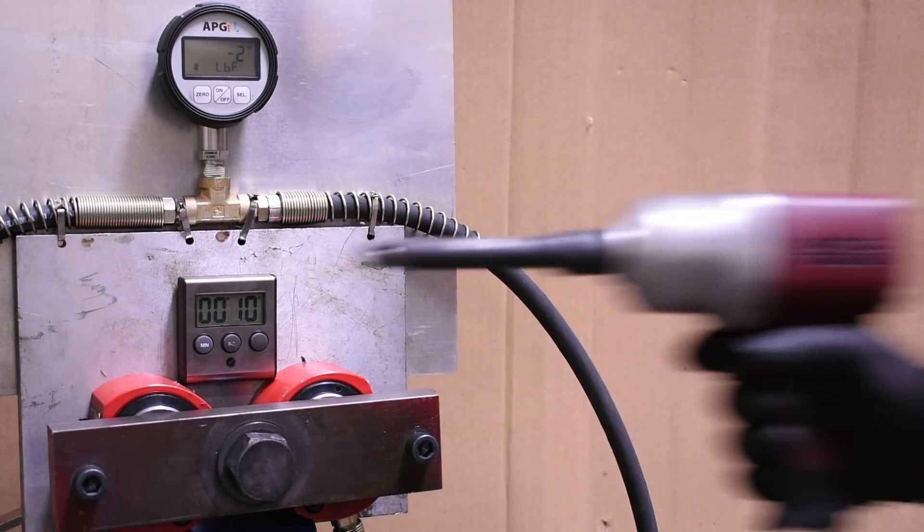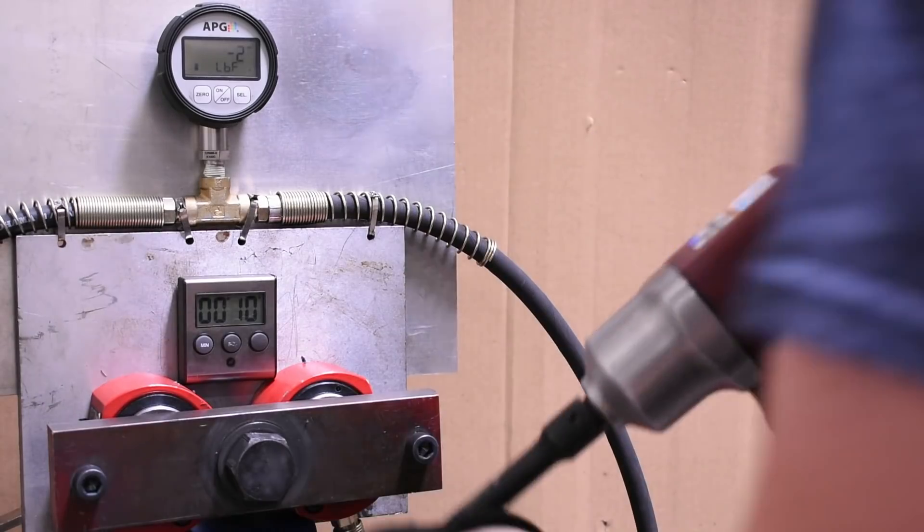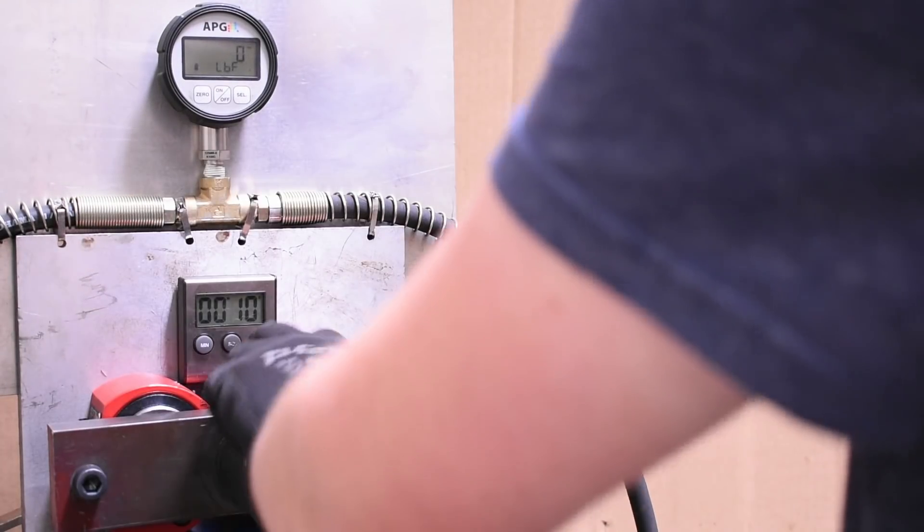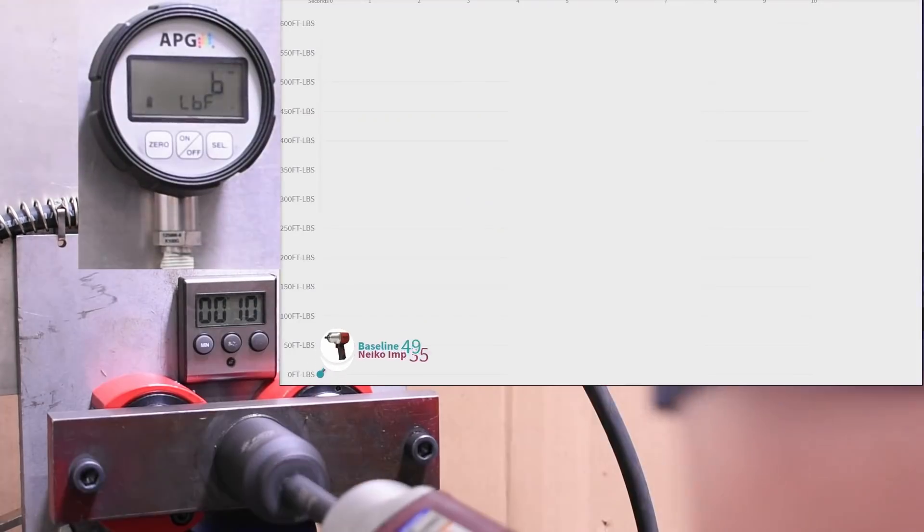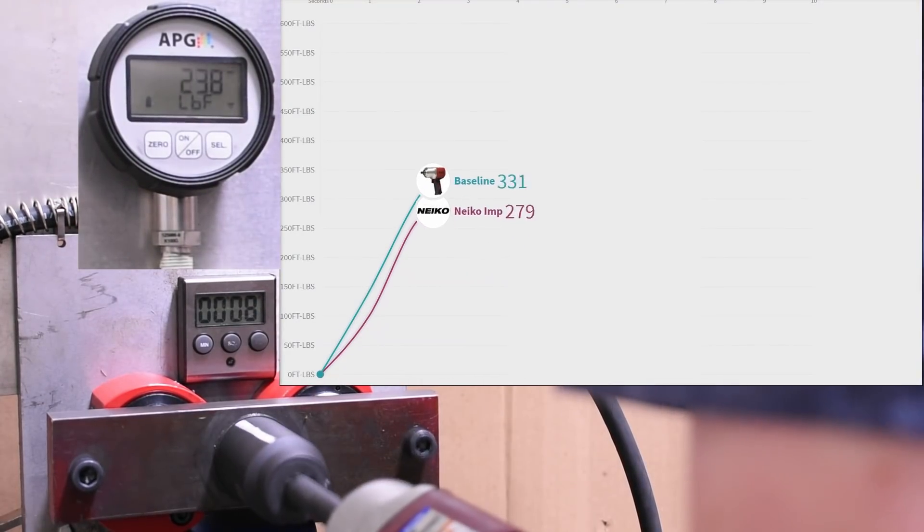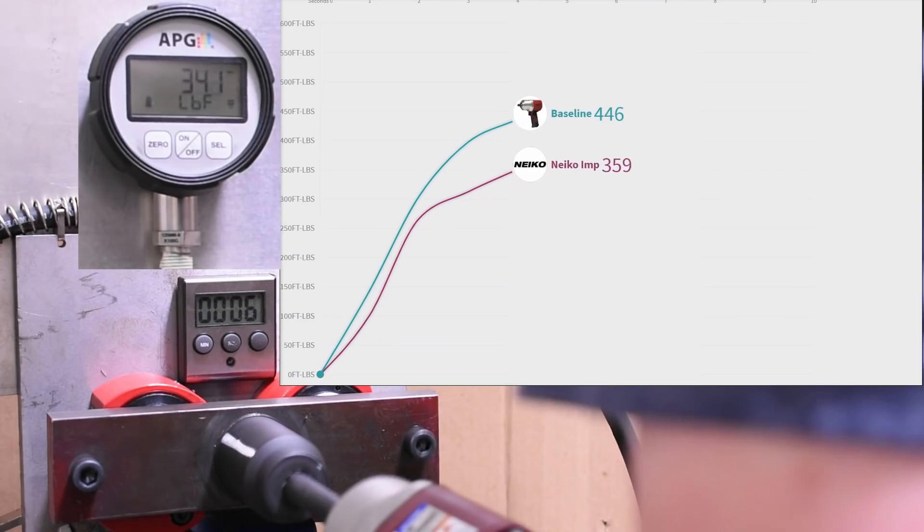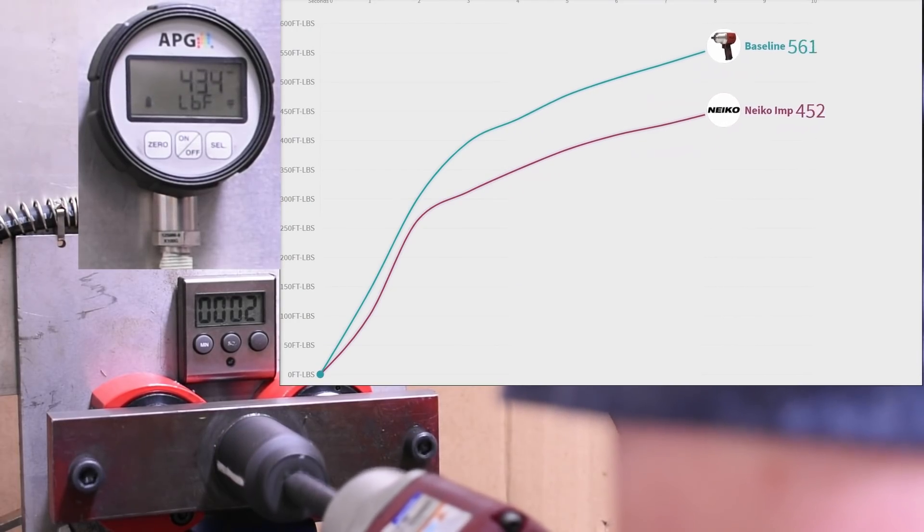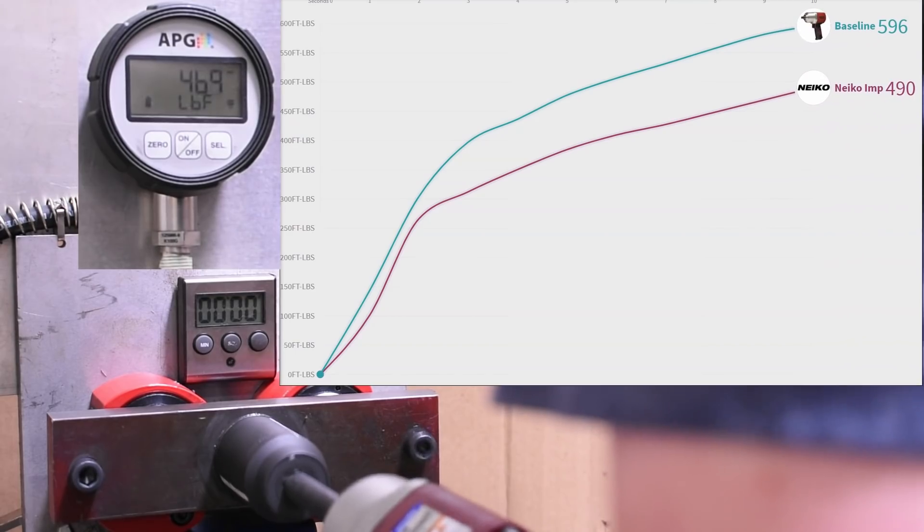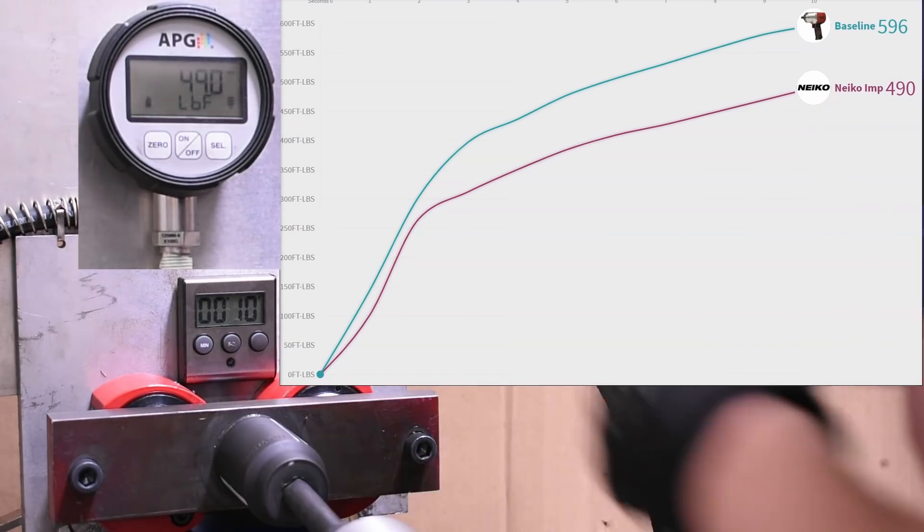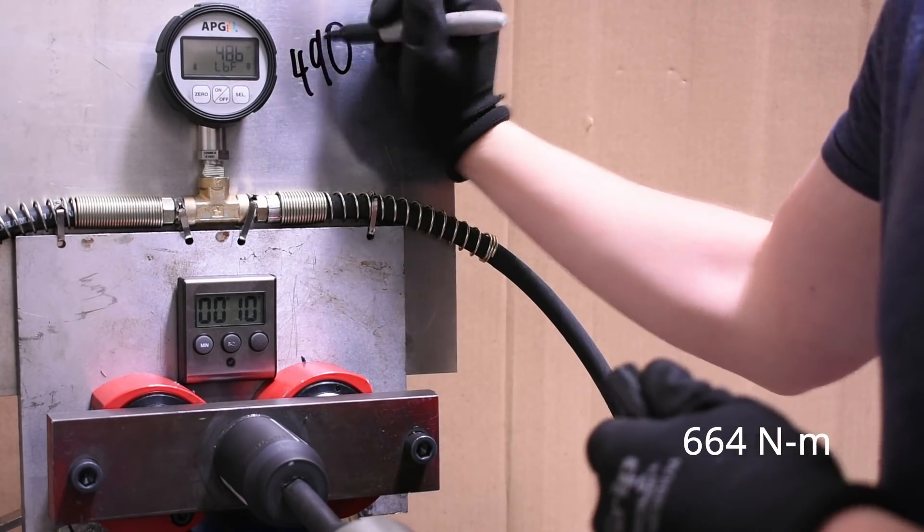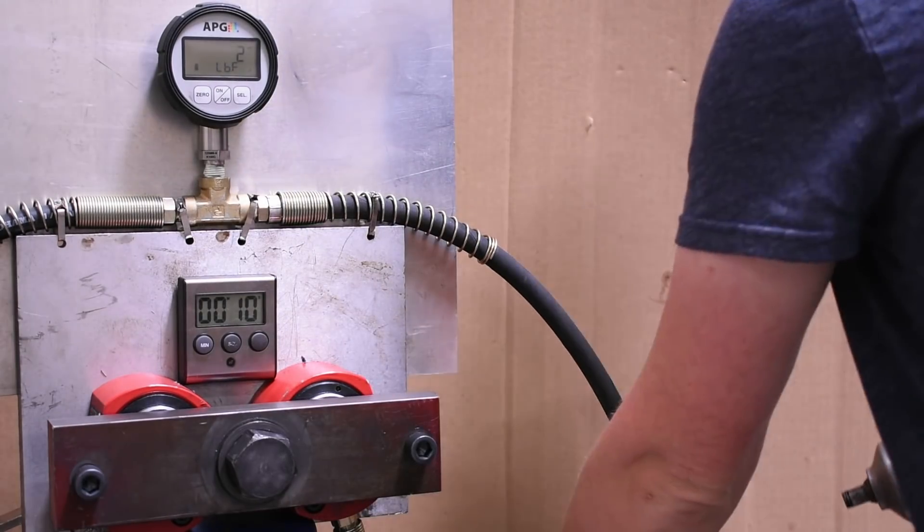Our first extension tested today will be the Neko, which we're inviting back to the channel, but have never tested alone by itself. So that's a 100 foot-pound loss from the 5-inch extension, around 18%. But alone, that's not very interesting information. Let's throw the other options from Snap-on into the mix.